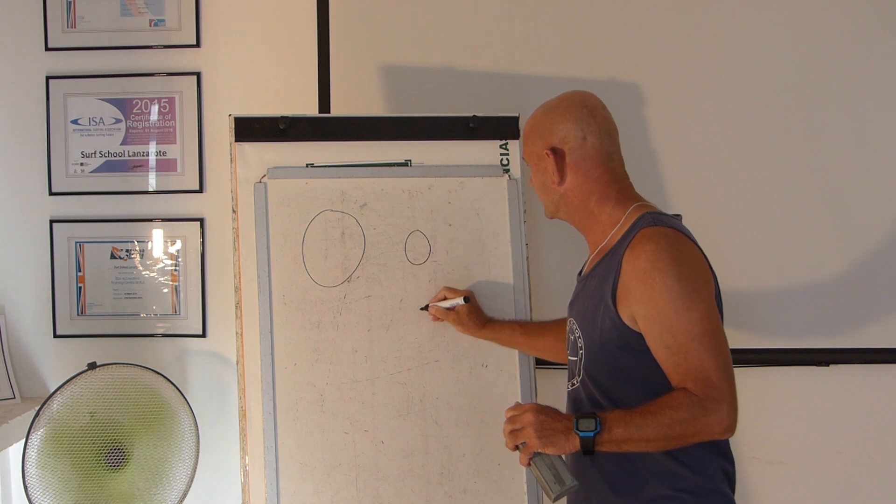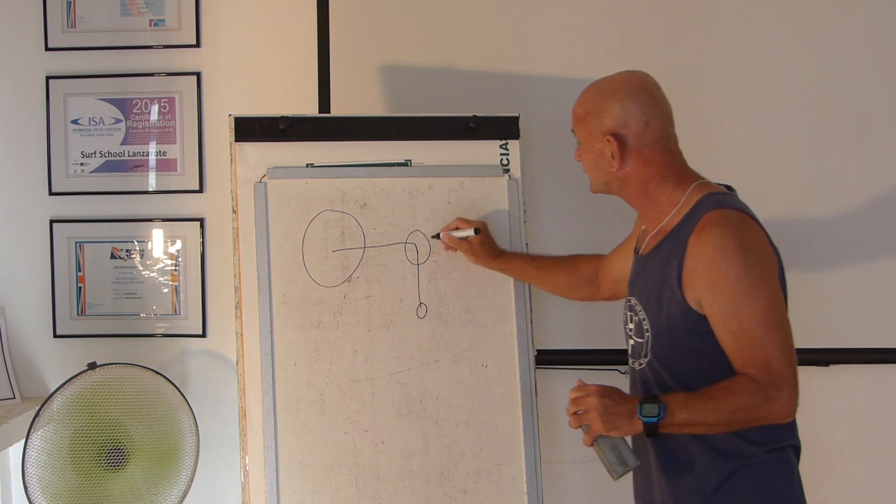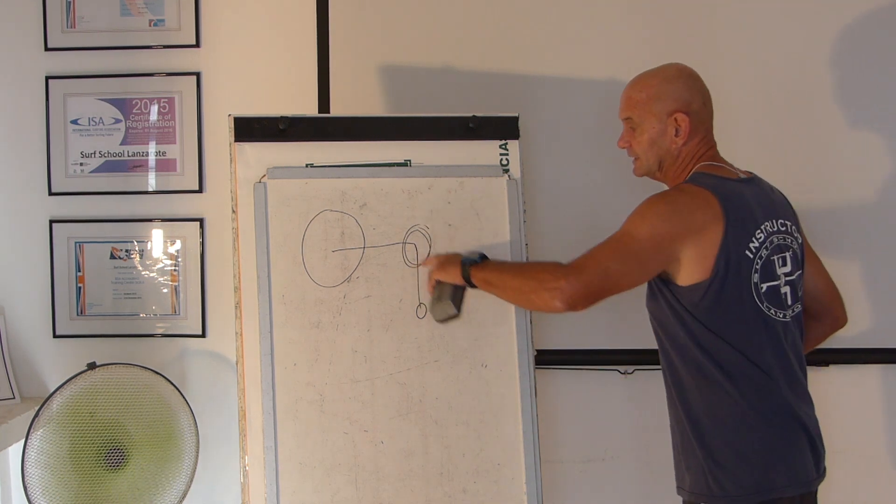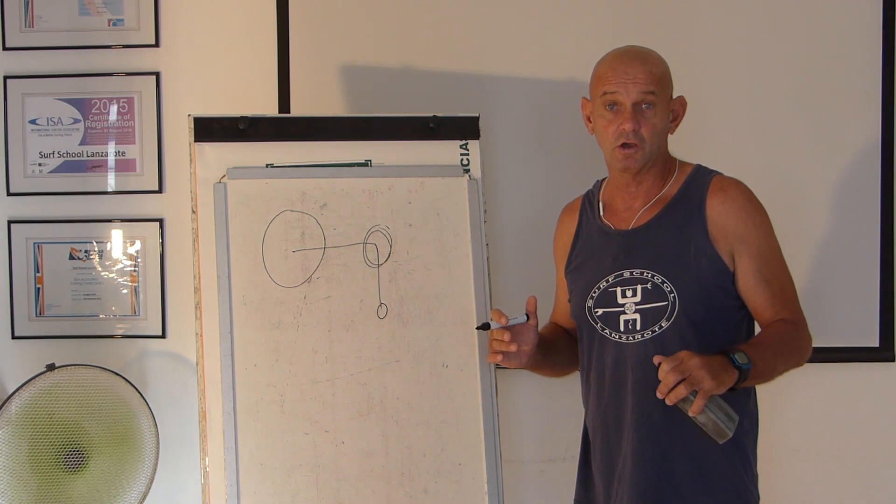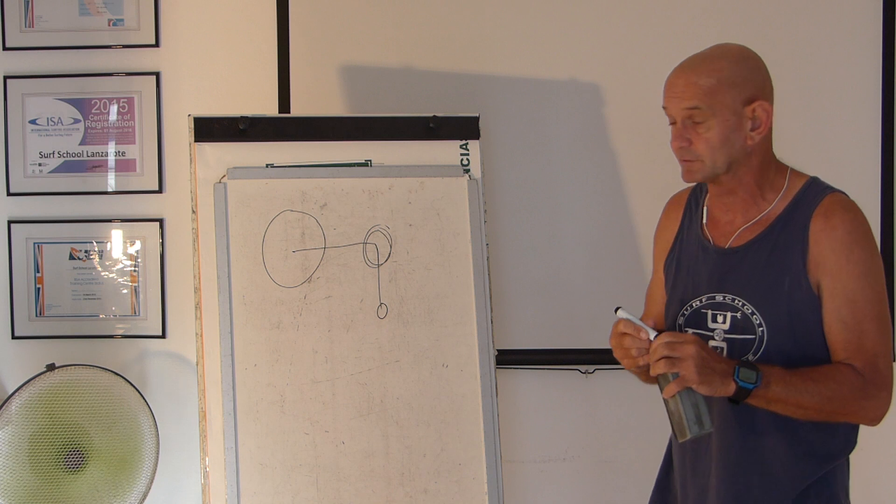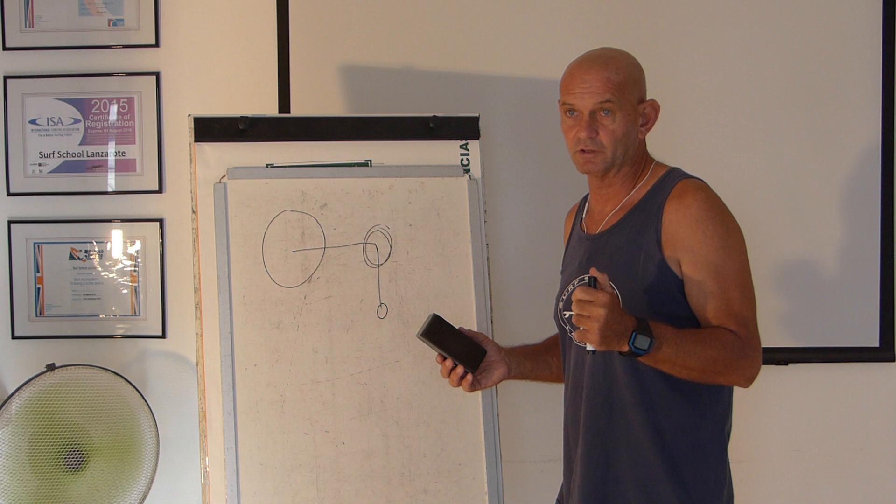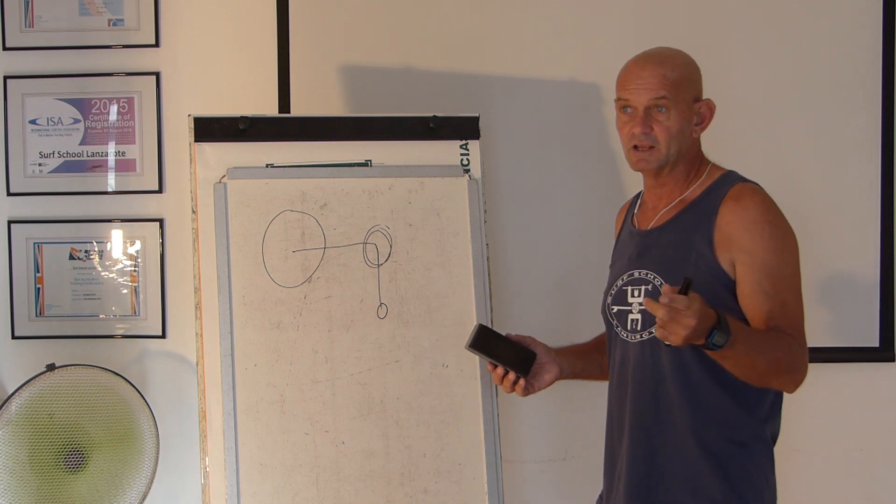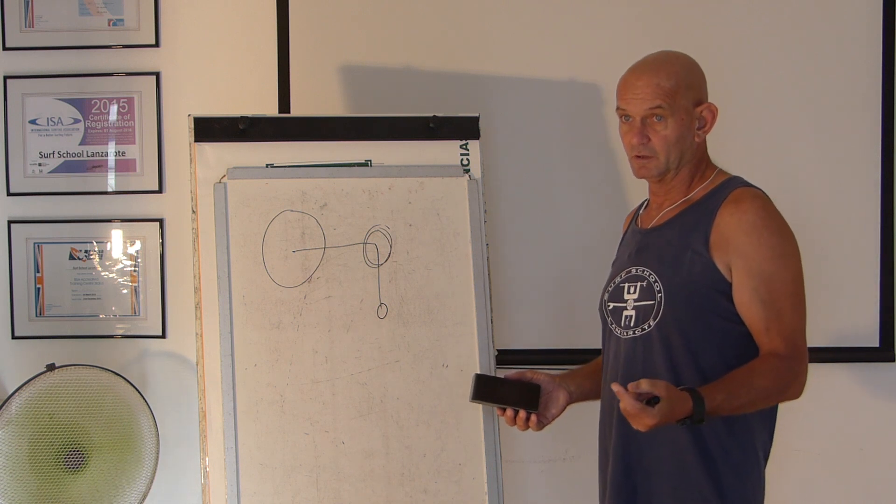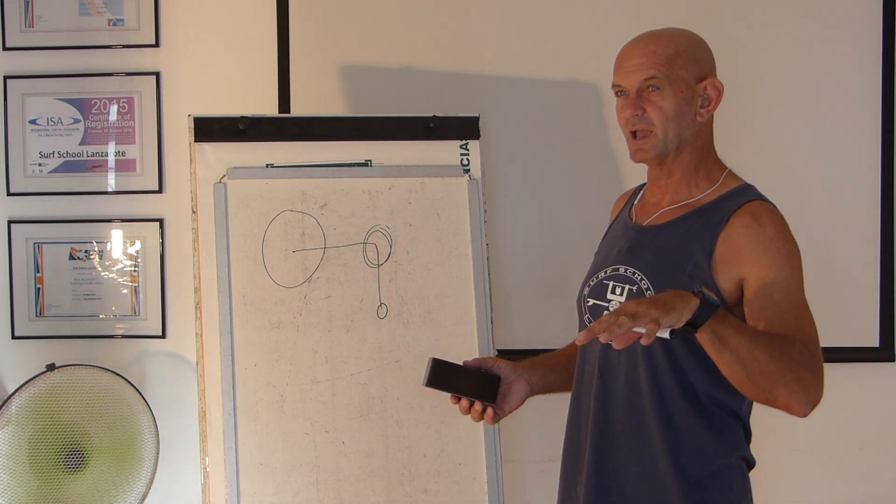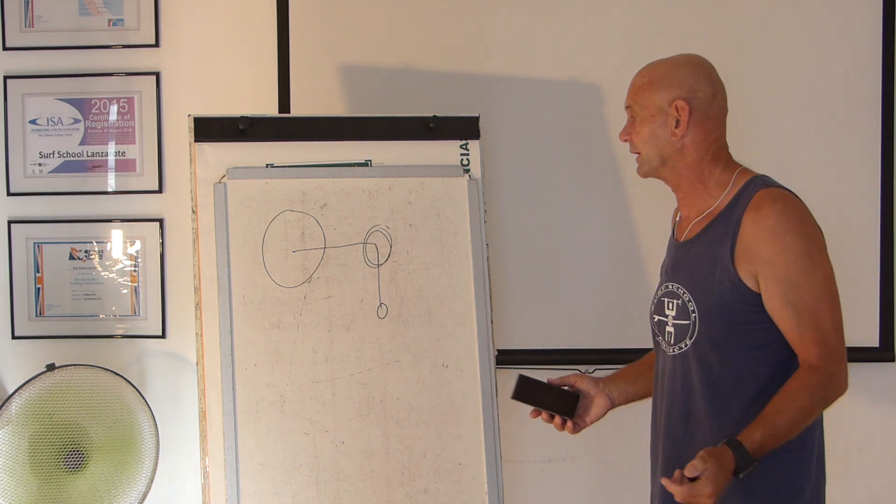The neap tide, the sea doesn't go that much up the beach and it doesn't go that far out. Don't forget, this could be reef or whatever. And this is what happens. Here's our sun, here's our earth and there's our moon. Now, they're completely out of line this time. So the least amount of gravitational pull is executed on the waters of the earth. So I don't get that much movement. Again, this might seriously affect the places where you surf.